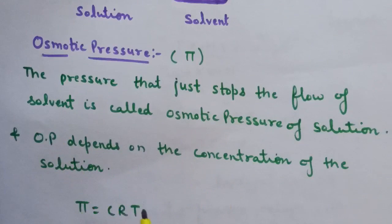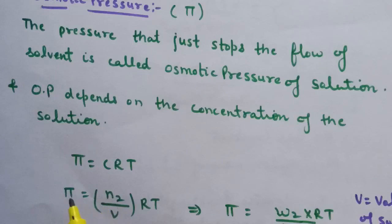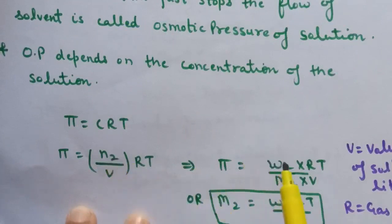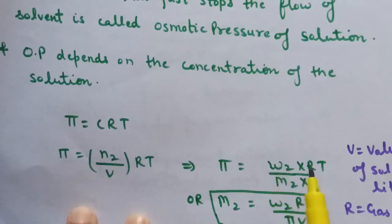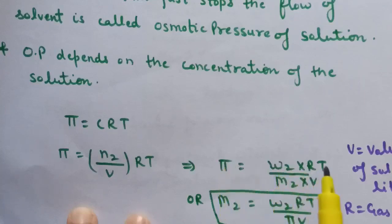The osmotic pressure depends on the concentration of the solution, and the expression is π = CRT, where C is concentration, R is the gas constant, and T is temperature. Since concentration equals number of moles divided by volume, we can write π = (W2/M2) × (RT/V), where W2 is mass of solute, M2 is molar mass of solute, and V is volume of solution in liters. From this expression, we can calculate the molar mass of the solute if osmotic pressure, weight of solute, volume, and temperature are given.